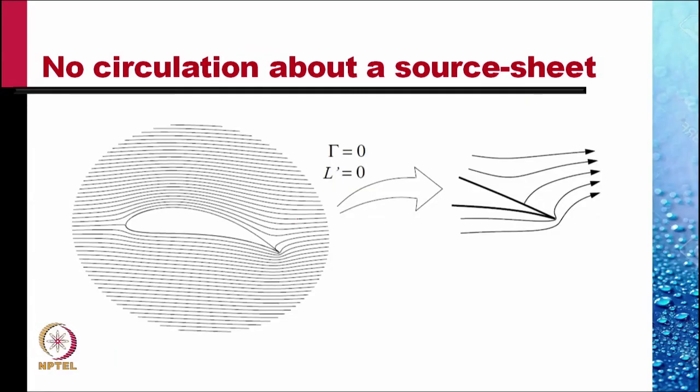There is no circulation about a source sheet we have calculated earlier. And so if we calculate the circulation in the flow that we obtained, we will find that circulation is zero and the lift per unit length of the aerofoil obtained would be zero, whatever be the angle of attack. So this method cannot predict the lift by itself.